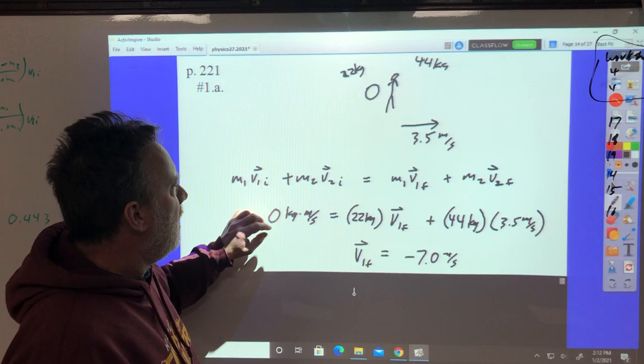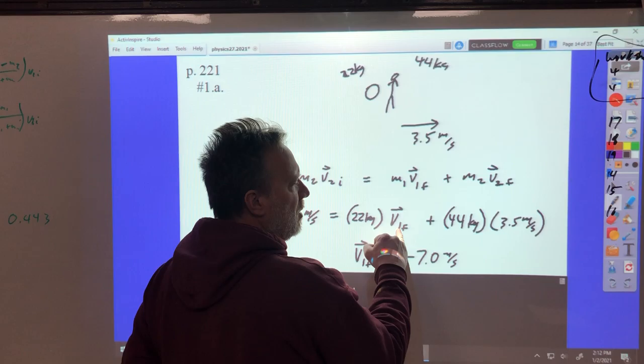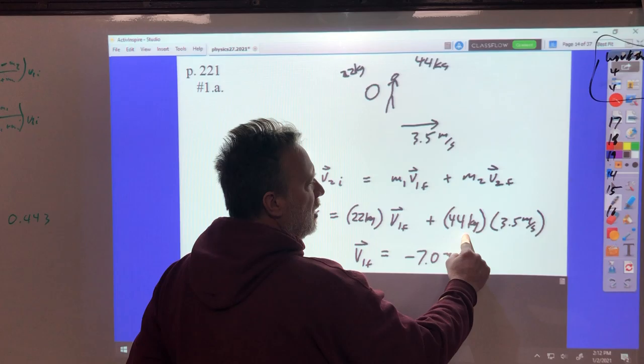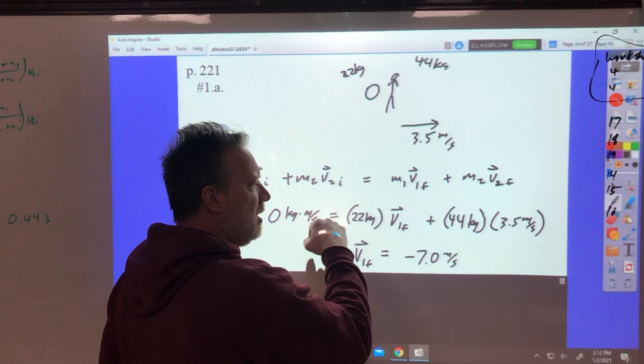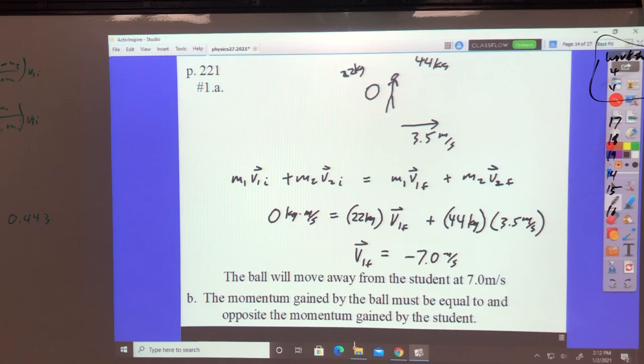Okay, to start with, the momentum of the kid and the ball, everything is zero. The ball has to be 22 kilograms times the final velocity for object one. The kid is 44 kilograms times 3.5. This positive number taken to the other side, dividing, you're going to get negative 7.0. So the ball will move away from the student at 7.0 meters per second.